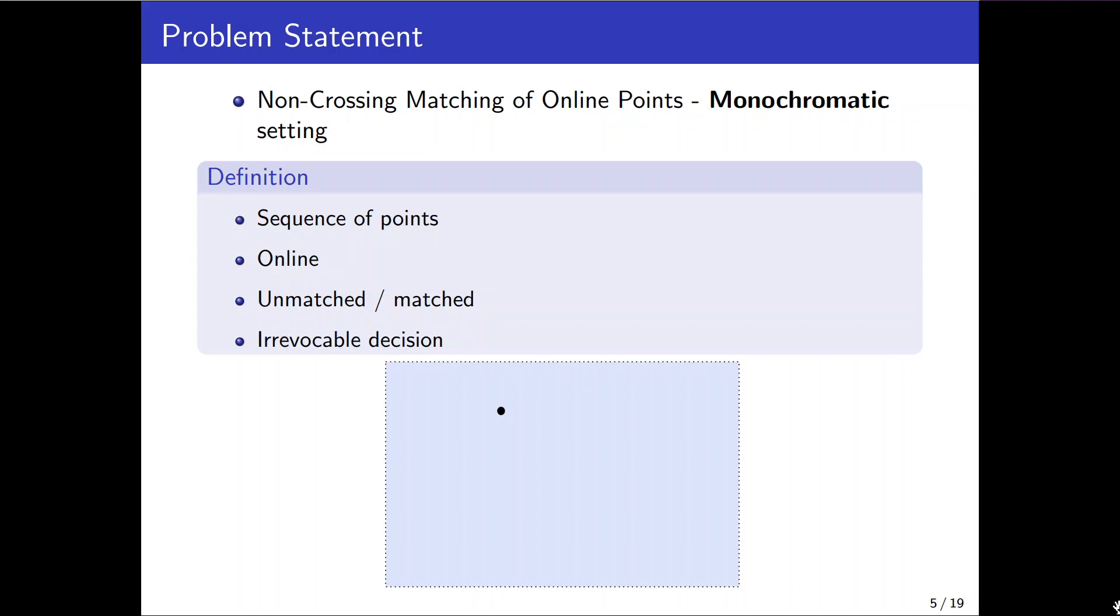In this case the input is a sequence of one color points in general position that are generated in an online manner like the provided animation here. Once a point is generated the online algorithm can leave it unmatched or matched with an existing unmatched point and it's important that the provided line segment doesn't cross.